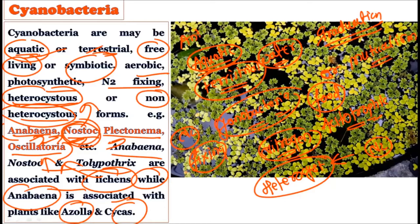Anthoceros is a bryophyte, and it forms a symbiotic association with cyanobacteria. Cyanobacteria are quite responsible for creating various types of symbiotic associations with different organisms that surround them. They may also be free-living.